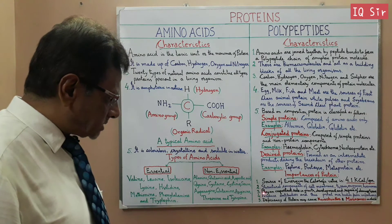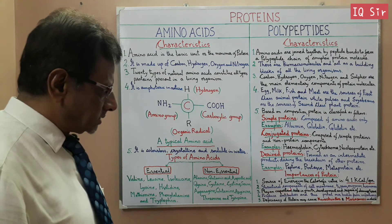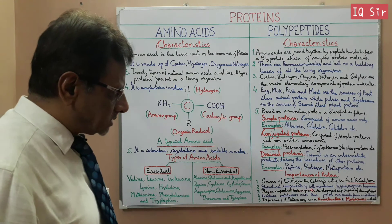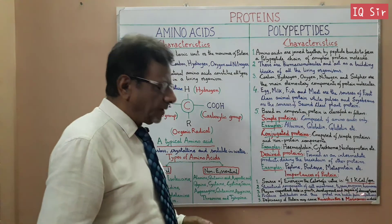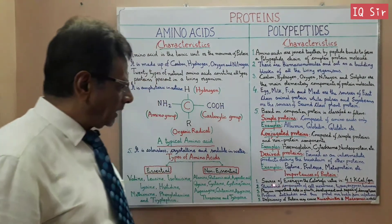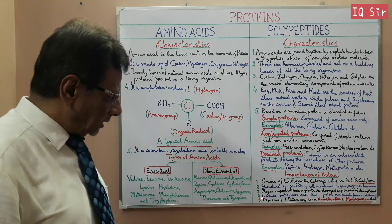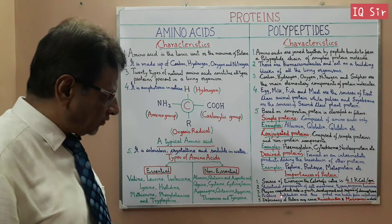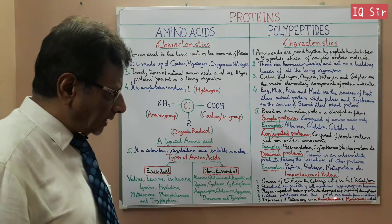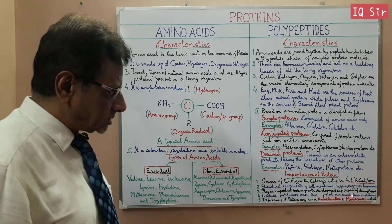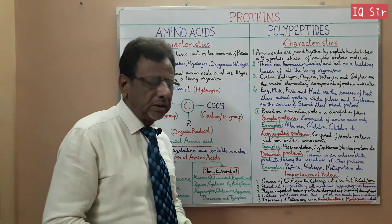The fourth point is that protein produces antibodies and thus protects our body from infections. Last but not least, deficiency of protein may cause kwashiorkor and marasmus disease in children below 5 years.